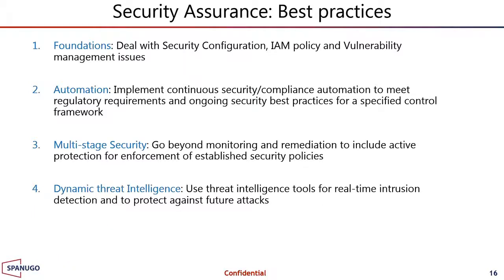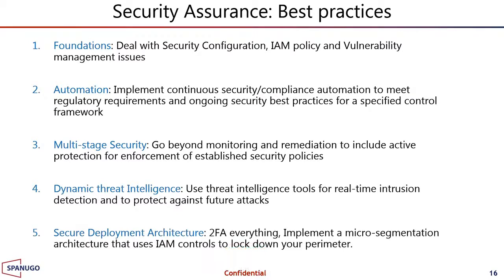Fourth, deal with threat intelligence — without threat intel, all your security mechanisms may be looking at static information. Threat intel adds the dynamic nature needed for future attacks. Fifth, have a secure deployment architecture: two-factor authentication, micro-segmentation, and IAM controls to lock down your perimeter. That perimeter could span hybrid cloud environments including on-prem and multi-cloud. These are the basic building blocks for a robust cybersecurity assurance program, customized based on your chosen control frameworks, risk tolerance level, and desired cyber posture.